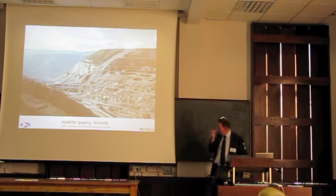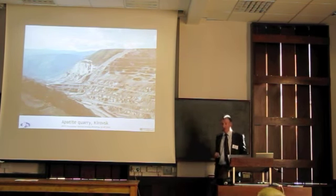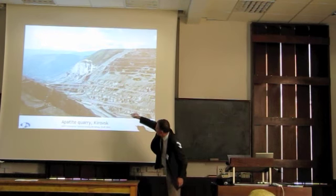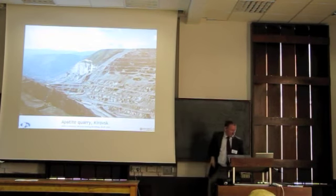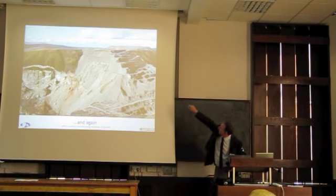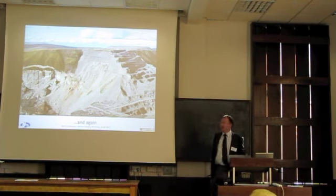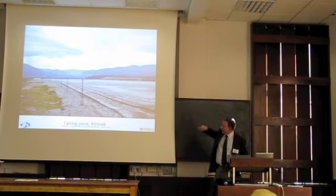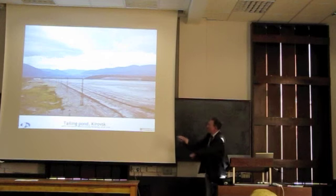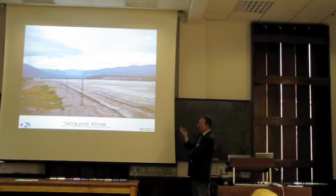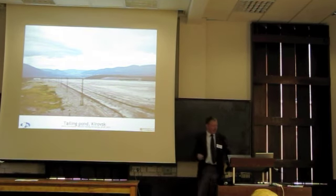This is the quarry for apatite, which is a phosphate mineral, at Kirovsk on the Kola Peninsula. There is an enormous truck visible, giving scale to a very, very big hole in the ground — something like three to four hundred metres deep. These are big buildings on the top there for scale. The tailings — the waste product, which isn't the phosphate — in this particular place are dumped into what used to be a lake, which is now just full of dust.